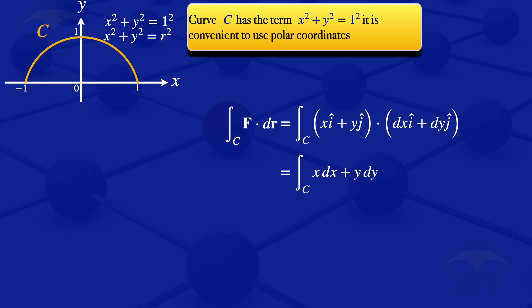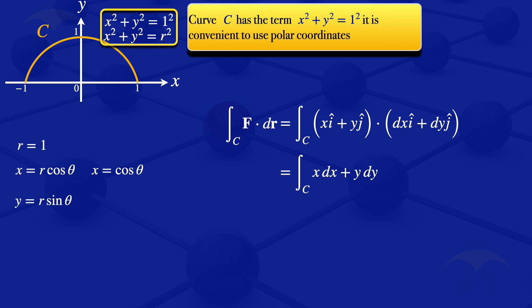When using polar coordinates, comparing with the equation of the circle, our radius r is 1. So x equals r cosine theta, and substituting r equals 1, we have x equals cosine theta. Similarly, y equals r sine theta, and substituting r equals 1, we have y equals sine theta. Differentiating x with respect to theta gives dx/dθ equals minus sine theta, and differentiating y with respect to theta gives dy/dθ equals cosine theta.